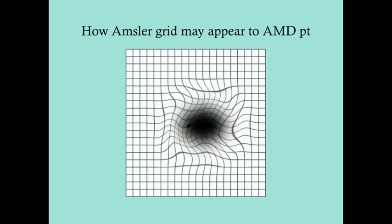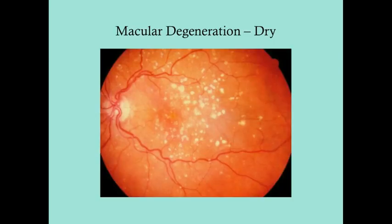Here's an example of how AMD would appear with indirect ophthalmoscopy in dry AMD. These small plaque-appearing nodules are drusen — not cotton wool spots — and you can see they are located right over the macula. Here is the macula, here is the optic disc, and the drusen are on the macula.